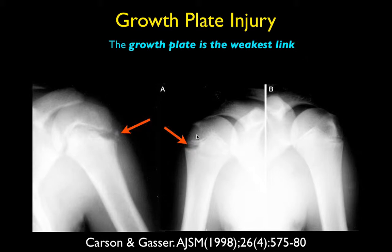In kids, the weakest link in the locomotor unit — bone, growth plate, epiphysis, tendon insertion, muscle — is the physis when the growth plates are still open. The bone, tendon, and muscle are all stronger. After the growth plate closes, the muscle becomes the weaker link. In late teens and early 20s we see more muscle injuries. In older individuals, degenerative changes of the tendons, called tendinosis, make the tendons the weak link in the cascade.